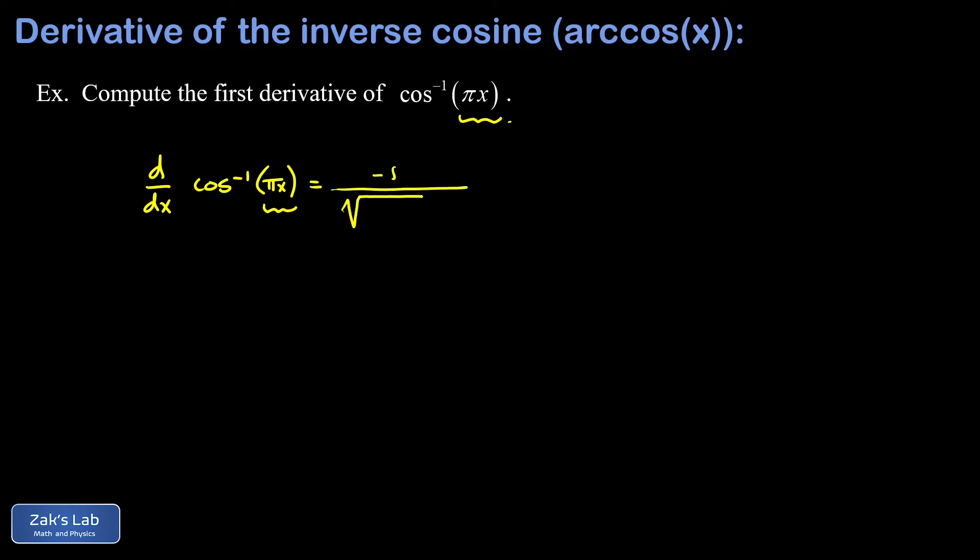Then the chain rule says I have to multiply by the derivative of pi x, and that's just pi. Cleaning things up a little, I can write it as negative pi divided by the square root of one minus pi squared x squared, and we're done.